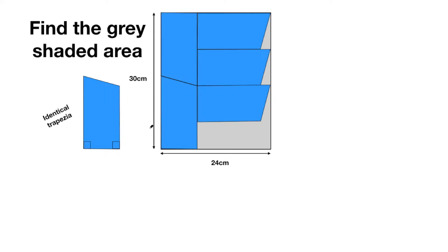Here we have a large rectangle. This is a rectangle and inside it I have five trapezia and they're all identical. They are right angled trapezia and we're looking for this gray shaded area. This is all of the information you're given and this is a six mark question.